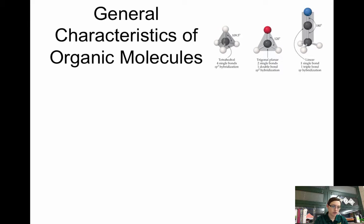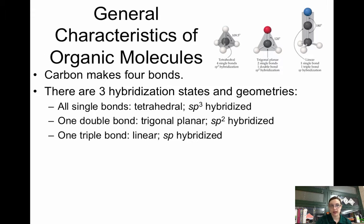So just some general characteristics of organic molecules. Carbon can make four bonds. Remember that carbon always wants to make four bonds, it never wants a lone pair. So there are essentially three hybridization states and geometries of organic molecules. If they have all single bonds, like this picture on the left, this is tetrahedral, and the hybridization of this carbon is sp3. Because notice there are four things bonded, if you remember using your fingers, sppp, so sp3.